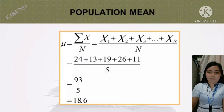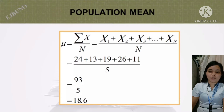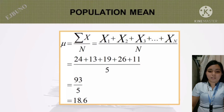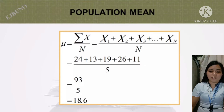Example of population mean. The population mean is equal to the summation of x over capital N, which equals 24 plus 13 plus 19 plus 26 plus 11 over 5, equals 93 over 5. The answer is 18.6.